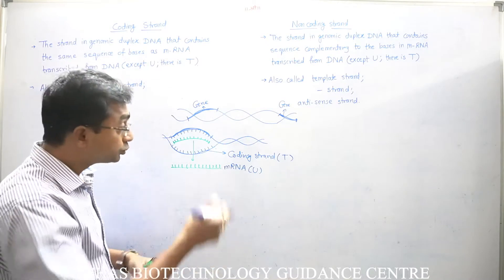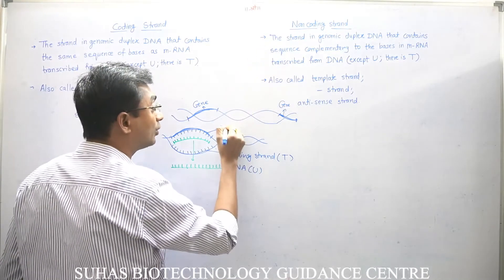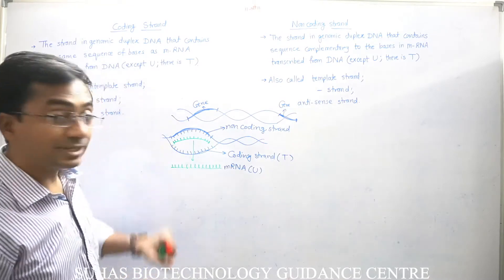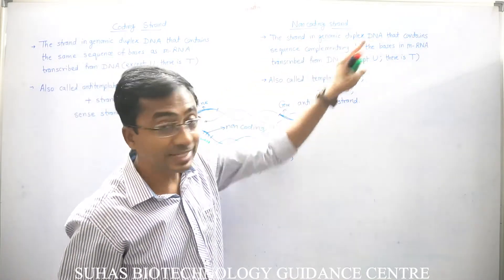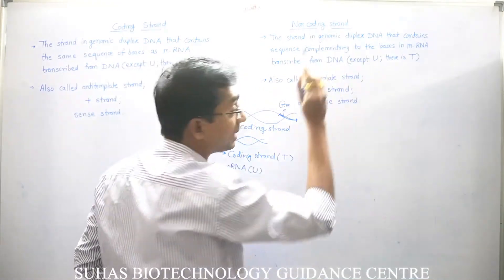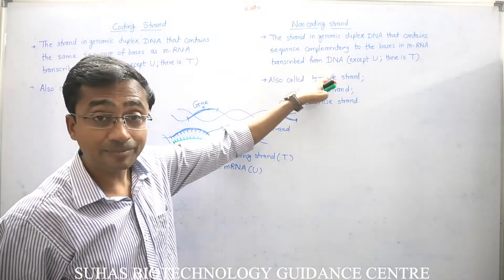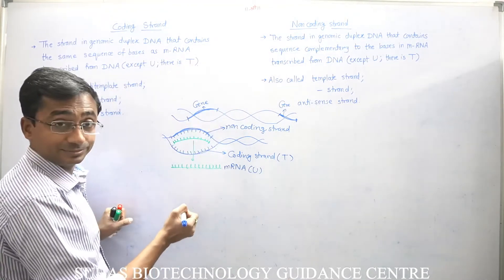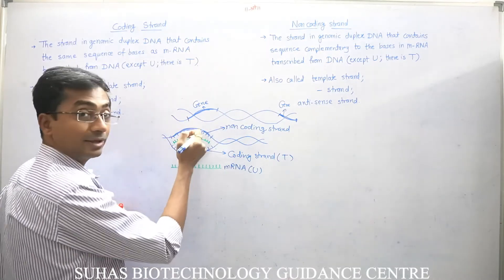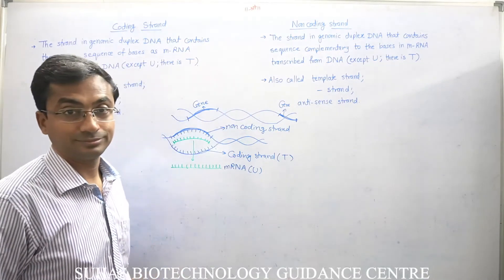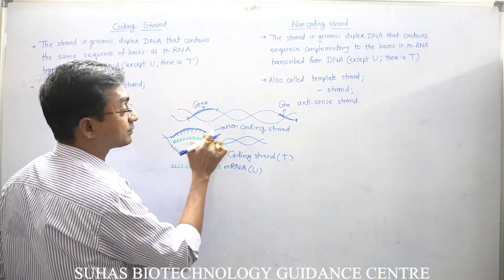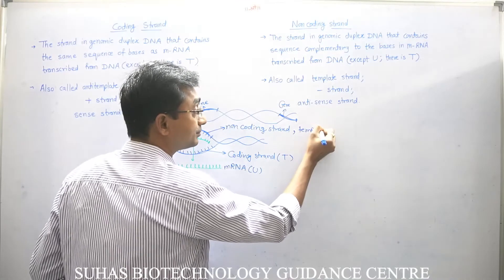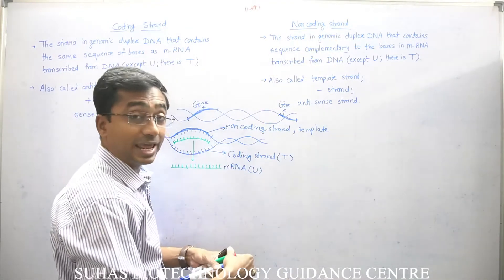The strand of the DNA which has a sequence the same as mRNA is coding, so what is this other strand? This strand is the non-coding strand. The non-coding strand is the strand in genomic duplex DNA that contains the sequence complementary to the bases in mRNA transcribed from DNA, except U — there is T. Though this strand is acting as a template, it is having a sequence complementary to mRNA, and that's why it is called the non-coding strand. We should not forget that the non-coding strand is acting as a template, and that's why it is also called the template strand.